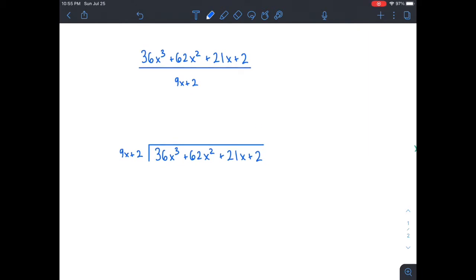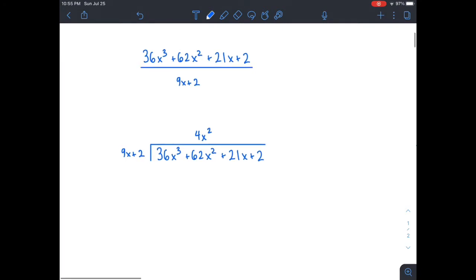First, we start off by looking at the first term right here and the first term right here. So how many times does 9x go into 36x cubed? That would be 4x squared. Then, just like regular division, you multiply the 4x squared with the 9x plus 2, and you multiply it with each of those terms. So then we get 36x cubed plus 8x squared.